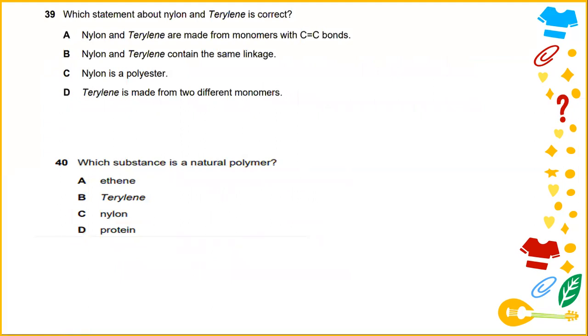Which statement about nylon and Terylene is correct? Ethylene glycol and terephthalic acid are monomers which on polymerization give Terylene. The answer for this would be Terylene is made from two different monomers.